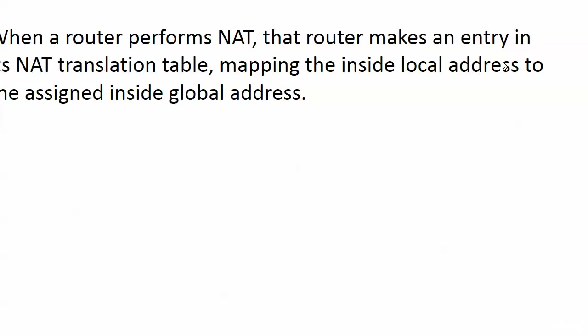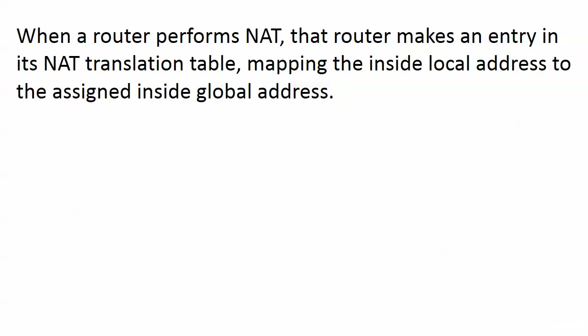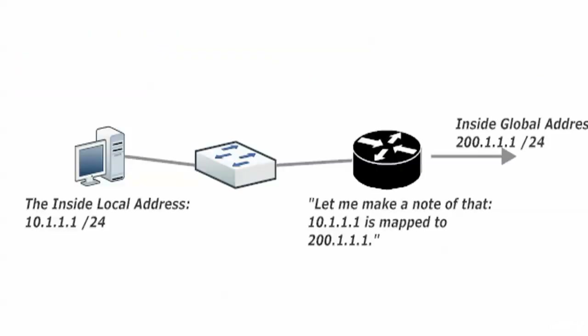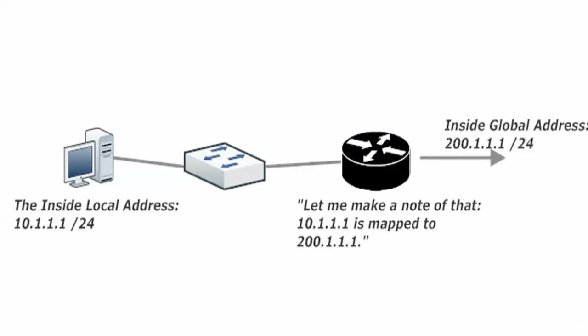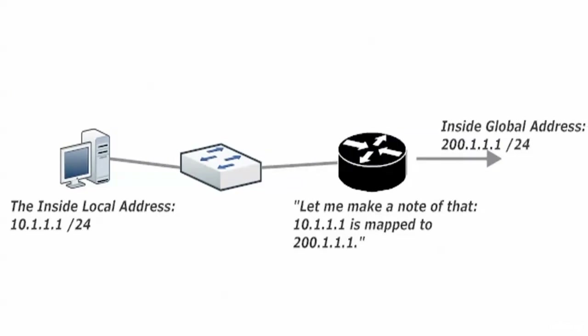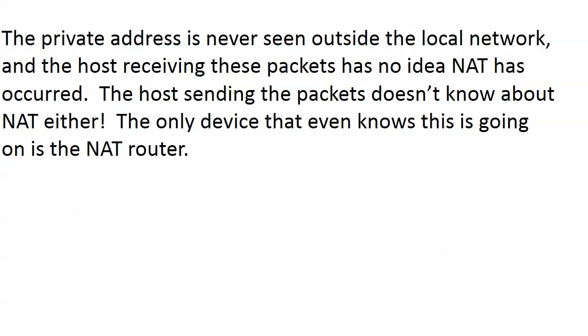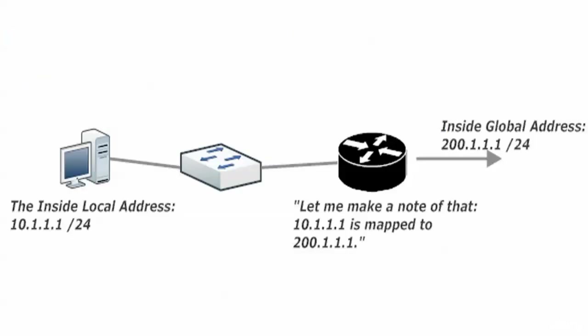When NAT is performed, a router makes an entry in its NAT translation table, mapping the inside local address to the assigned inside global address. You'll see exactly how that assignment takes place when we configure static NAT and dynamic NAT. The router simply maps 10.1.1.1 to 200.1.1.1 - and it doesn't just pull those out of the sky. We configure the addresses that are to be mapped and translated, as you'll see in our two labs. The private address is never seen outside the local network, and the only device that knows what's going on is that router.